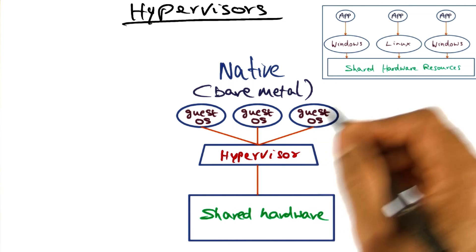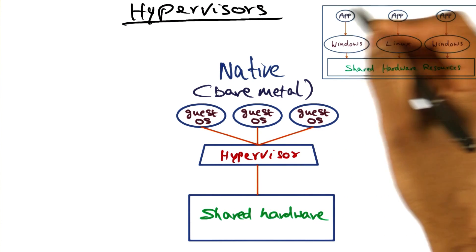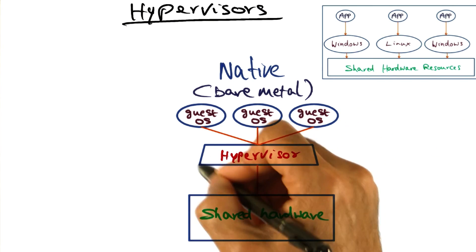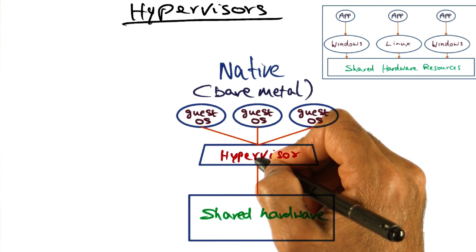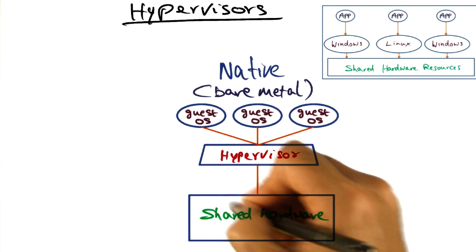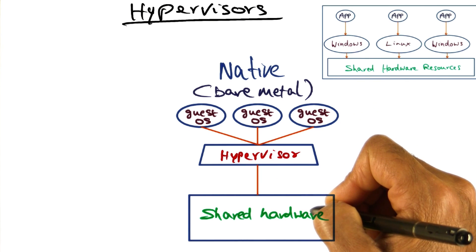And all of the operating systems that I'm showing you inside the black box are running on top of this hypervisor. They're called the guest operating systems because they're the guest of the hypervisor running on the shared resource.